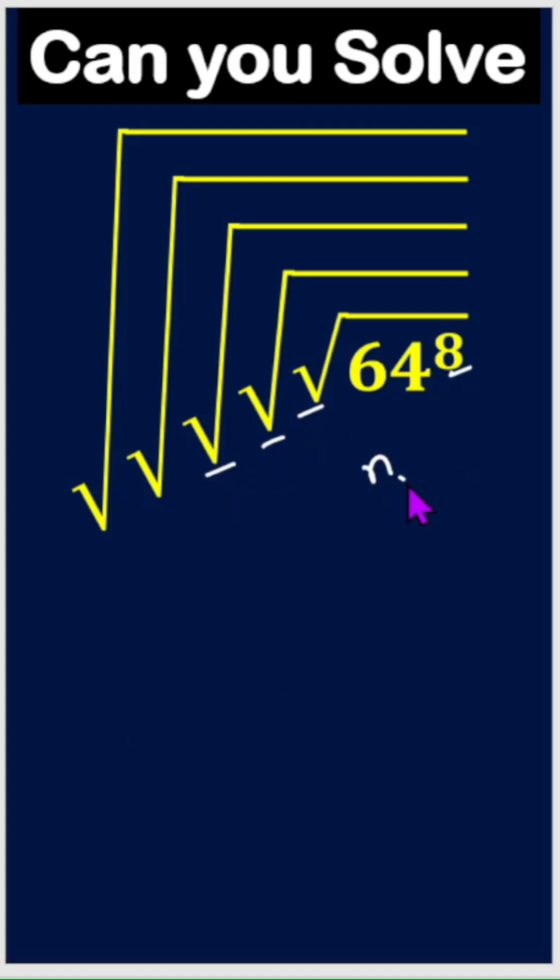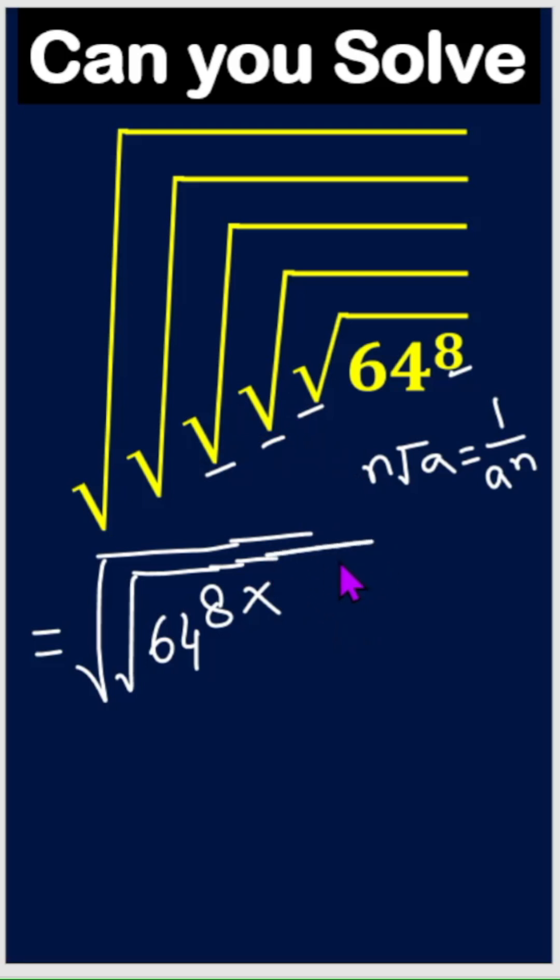We know nth root of a equals 1 over a to the power n. So here is first root, second root, right? And then this 64 to the power 8 times against these three roots, we can write 1 over 8, right?